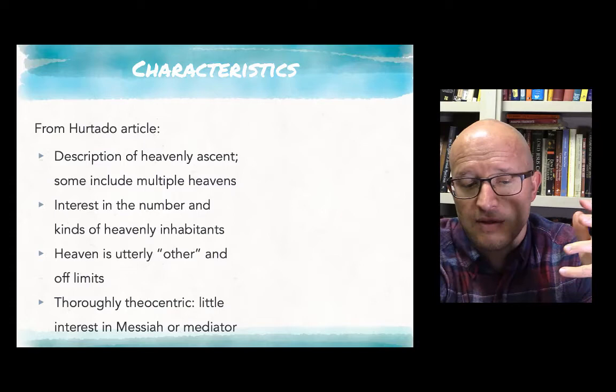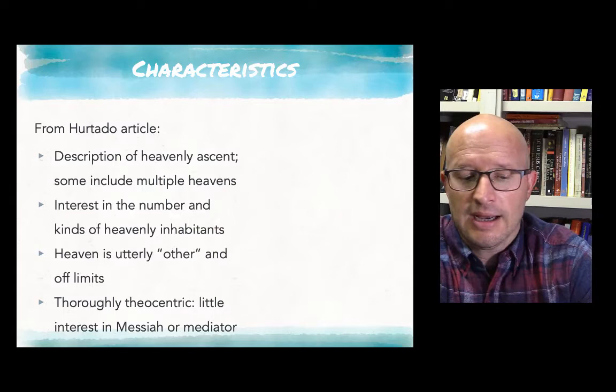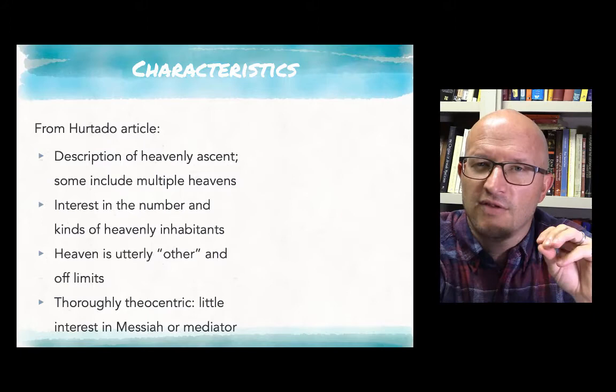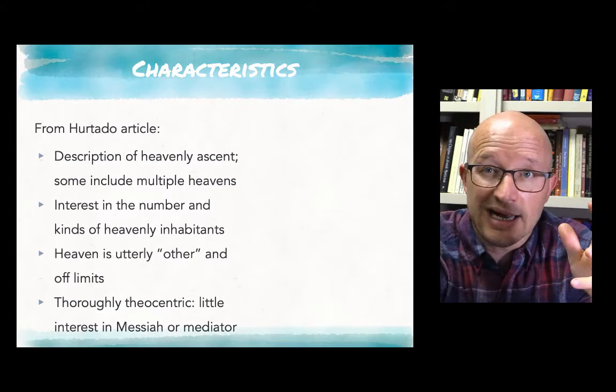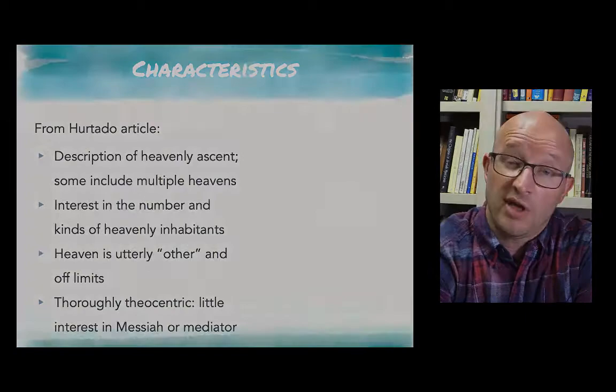The fourth characteristic is that these traditions are, as Hurtado says, thoroughly theocentric. That is to say, they're primarily interested in God and the enthroned one. Yes, they're interested in talking about the attendants, but the real focus is on the one who sits on the throne. It's interesting that there's very little interest in a messiah or mediator figure. We might say that sometimes the seer, like Enoch, is functioning as something like a mediator, but by and large these traditions focus the attention on God, the one who is enthroned.